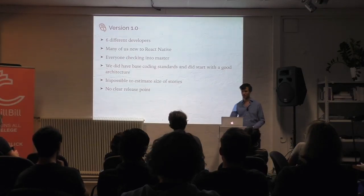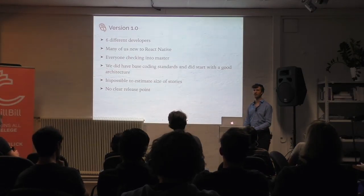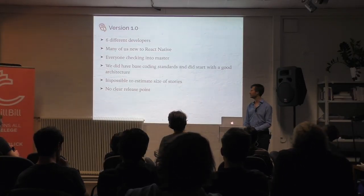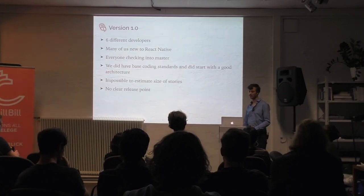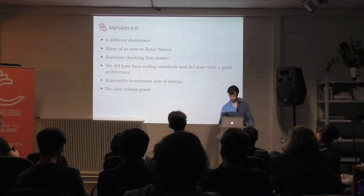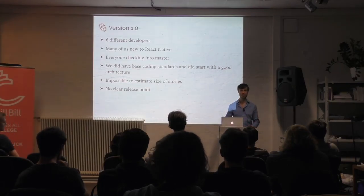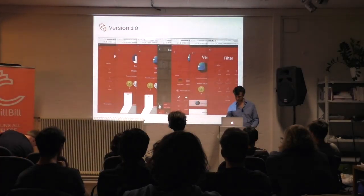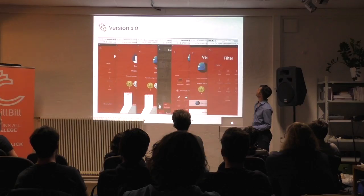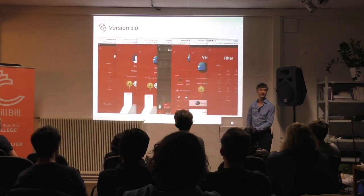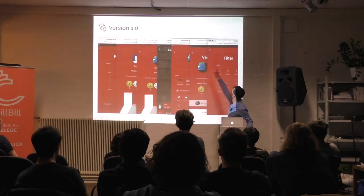It was impossible to estimate the size of stories — we didn't have any process framework at the beginning and didn't have any clear release point. Since we were a new team, we didn't know each other's coding style. You can see from this screenshot from our testers — at one point we had about six different implementations of our app bar, with different positioning and some having bigger arrows than others.